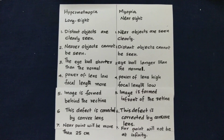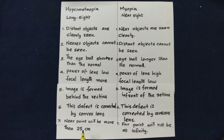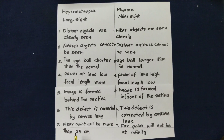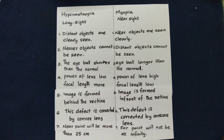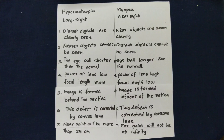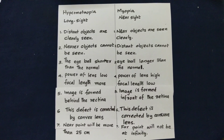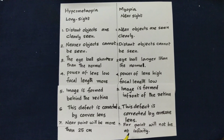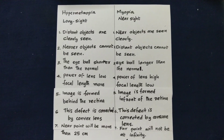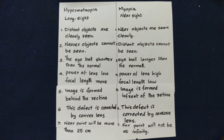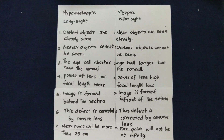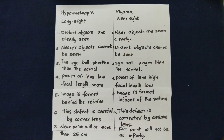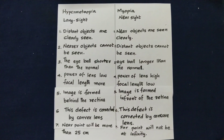Last point: the near point will be more than 25 cm. The image will be formed at the near point. The far point will not be at infinity — this applies to short sight and near sight. Far point will not be at infinity.